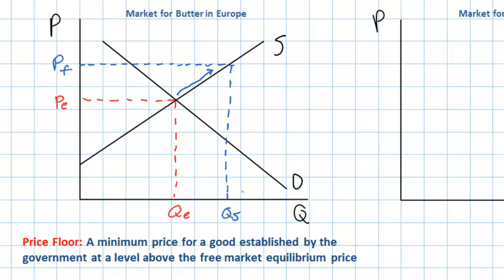Due to the high price of butter in Europe, European butter producers have an incentive to increase the quantity of butter that they supply. On the other hand, an increase in the price of butter has a different effect on the quantity demanded. As we learned in previous units, there is an inverse relationship between the price of a particular good and the quantity that consumers will demand. For this reason, as the price of butter is raised from PE to PF, the quantity demanded falls from QE to a lower quantity of QD.